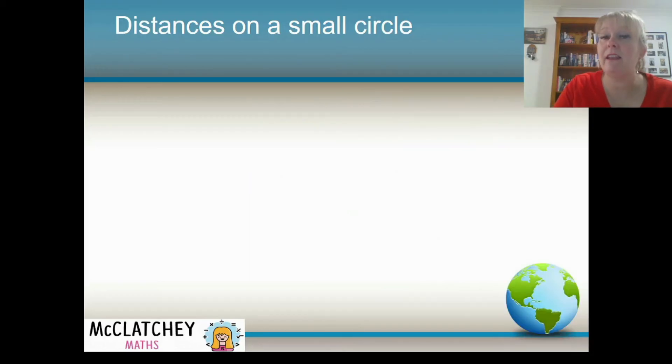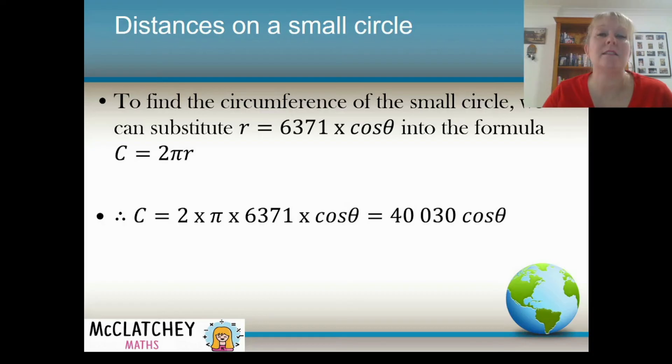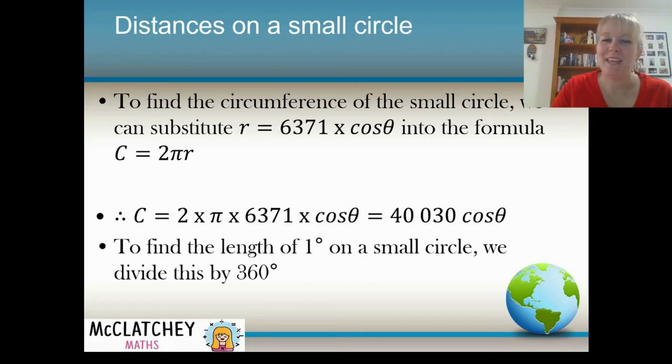Now we can expand that out now to find the circumference of that small circle. If we substitute that information we have about the radius into our formula 2πr. So now I've substituted that in. C equals 2 times π times what we found the value of r was 6,371 times cosine theta. And because 2 and π are both numbers and 6,371 is a number, we can simplify that on our calculator. And we end up with 40,030 multiplied by cosine theta. That gives us the circumference of our line of latitude. Now you might be thinking yourself, well, I still have no idea what to do because I don't know what theta is. We'll get there. Don't worry.